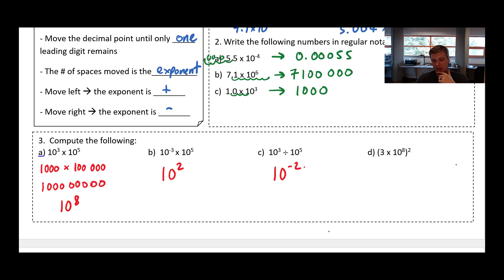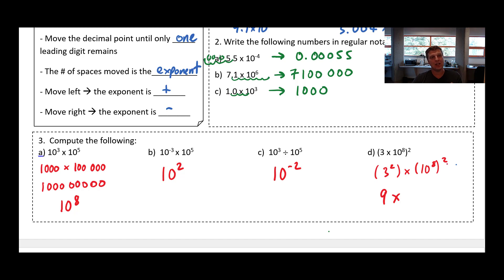Last but not least, take a look at this one right here. I've got an exponent of an exponent: 3 times 10 to the 8, squared. We could think of that as 3 squared times 10 to the 8 squared. 3 squared is easy — that's just 9. But when I have an exponent of an exponent, 10 to the 8 to the power of 2, that means I have two sets of 10 to the 8, so I need to multiply those two exponents. 8 times 2 is 16, so this becomes 9 times 10 to the power of 16. Okay, that's it for our first lesson. Thanks for tuning in.